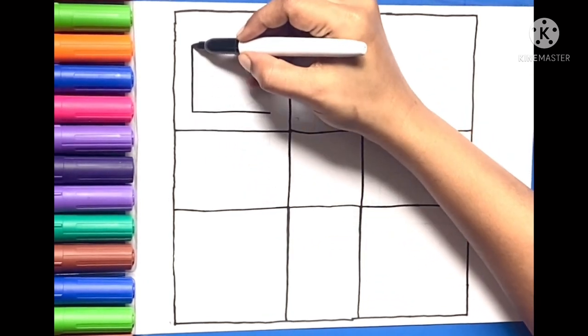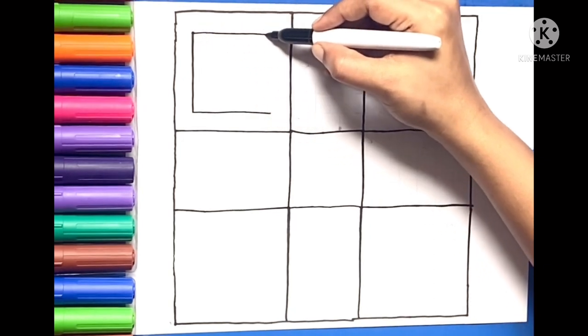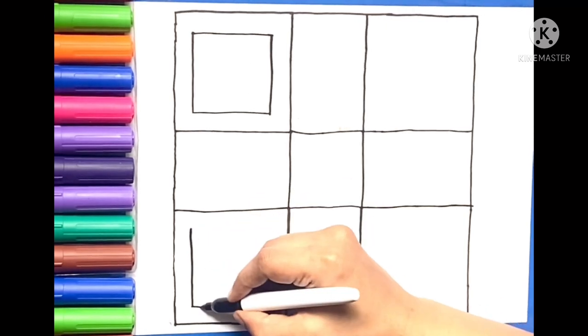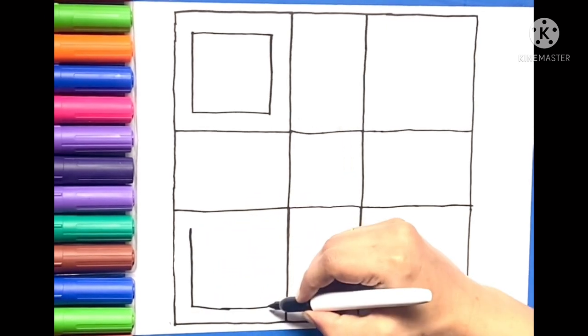Now we are going to draw small squares inside on each four big square boxes.